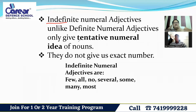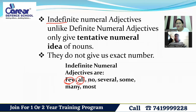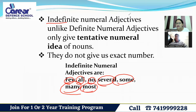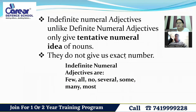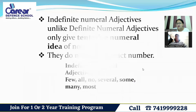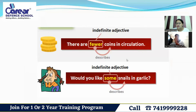With indefinite numeral adjectives, you don't get the exact number — you get only a rough idea. So what are indefinite numeral adjectives? Words like few, all, no, several, some, many, most — these are indefinite numeral adjectives because they don't give us an exact number, only a tentative idea.